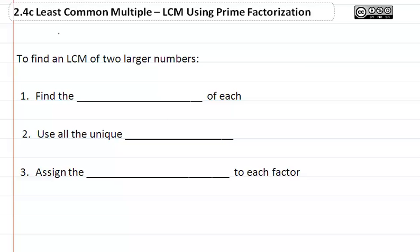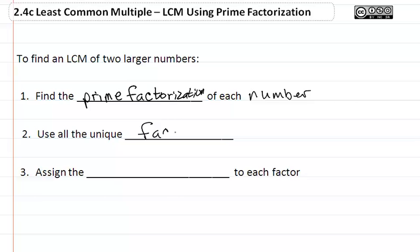2.4c: Least Common Multiple (LCM) using prime factorization. To find the LCM of two large numbers, the first thing we want to do is find the prime factorization of each number. We want to use all the unique factors and assign the highest exponent to each factor.